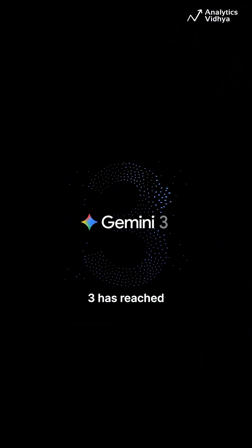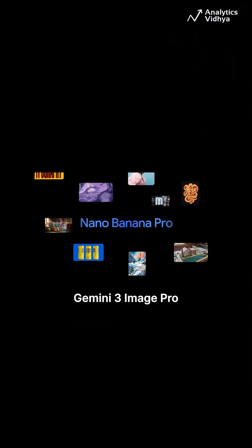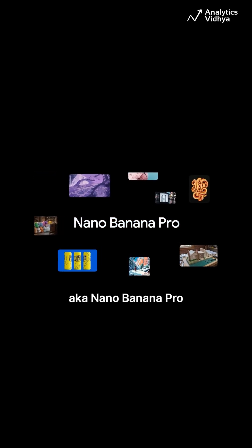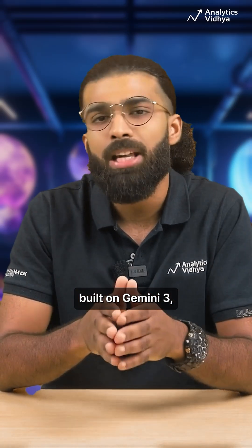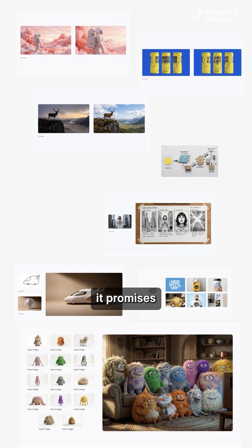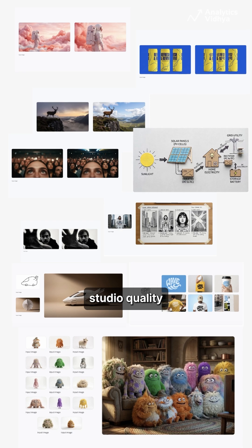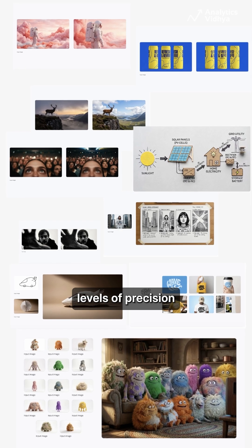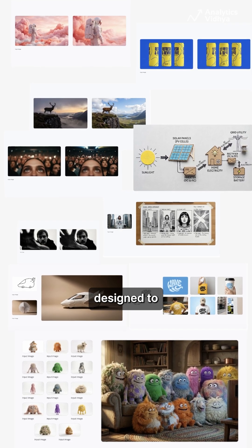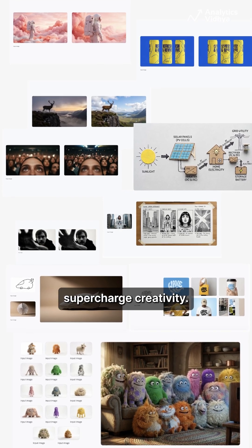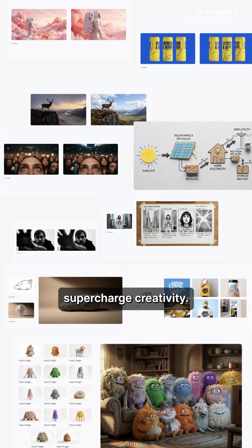Just when we thought Gemini 3 has reached the pinnacle of LLMs, Google announces Gemini 3 Image Pro, aka Nano Banana Pro. Built on Gemini 3, it promises studio-quality levels of precision and control designed to supercharge creativity.